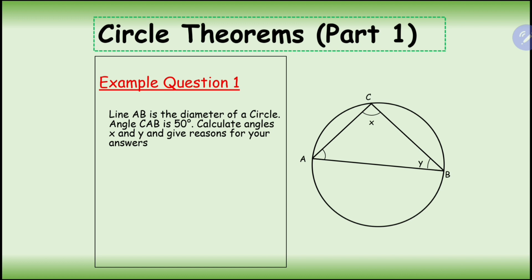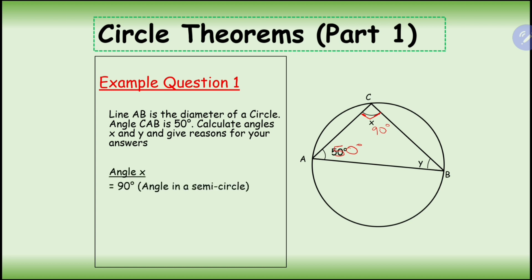Example question: line AB is the diameter of a circle. Angle CAB is 50 degrees. Calculate angles x and y and give reasons. So we know this is 50 degrees, and the angle in a semicircle is 90 degrees, so although it's not drawn perfectly, this is 90 degrees. Since angles in a triangle equal 180, we do 180 minus 90 minus 50. Angle x is 90 because it's the angle in a semicircle; angle y is 40 degrees.